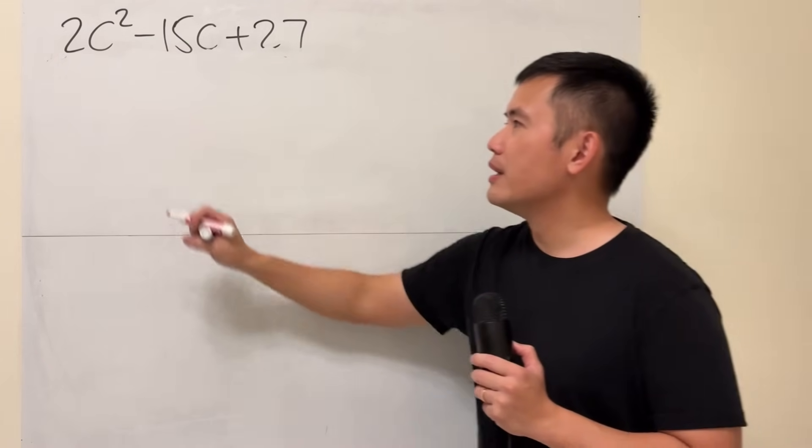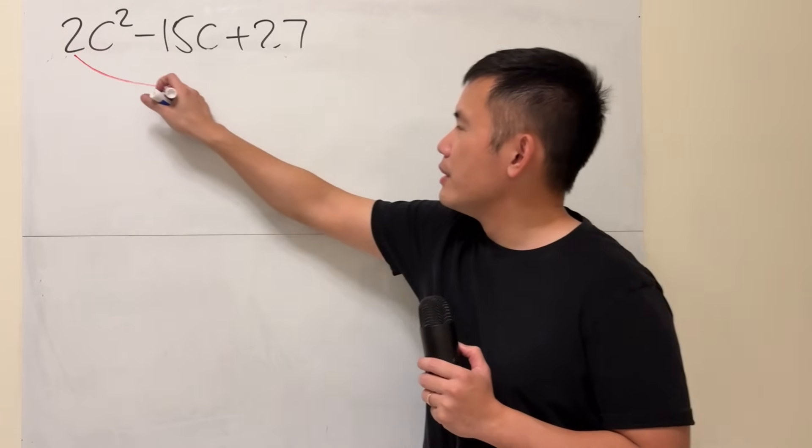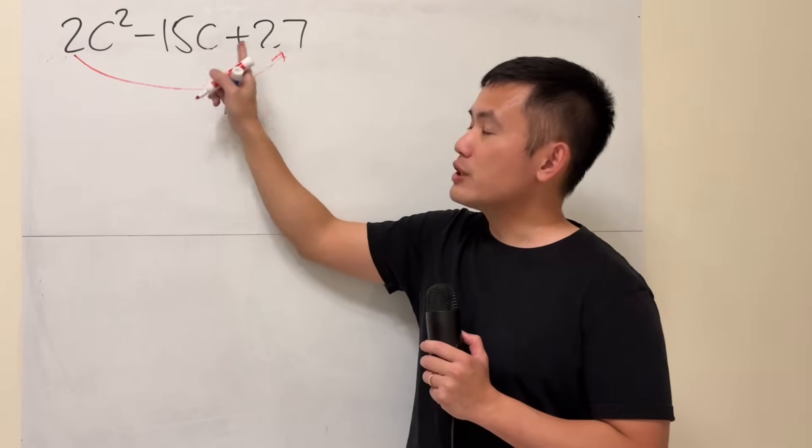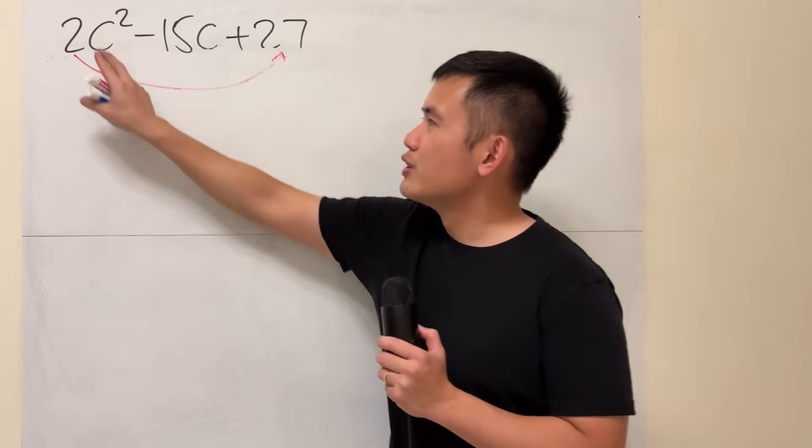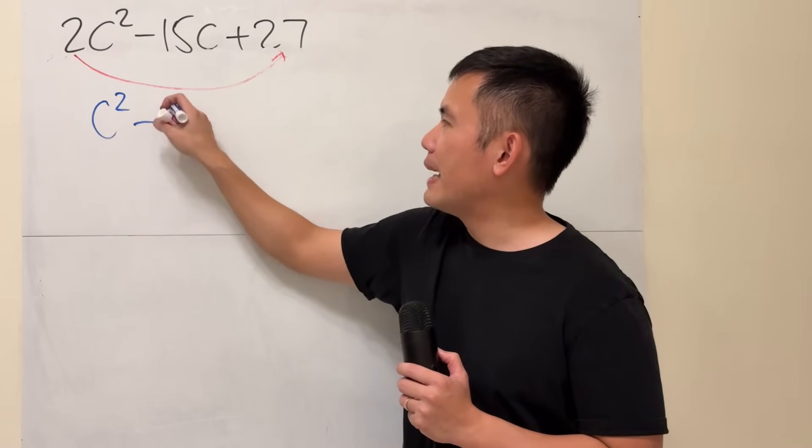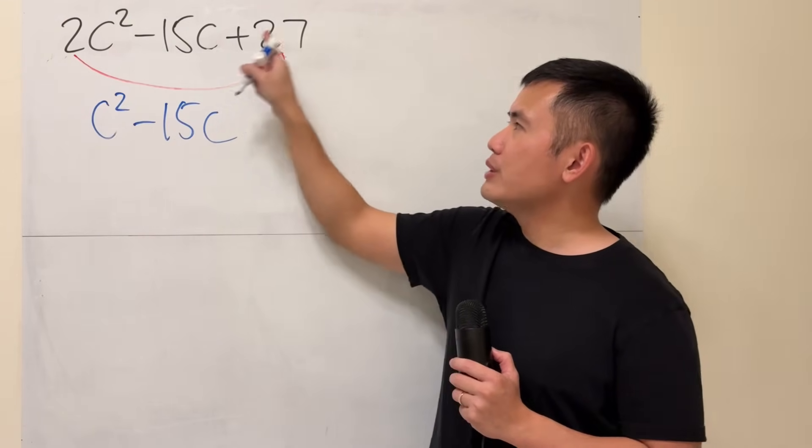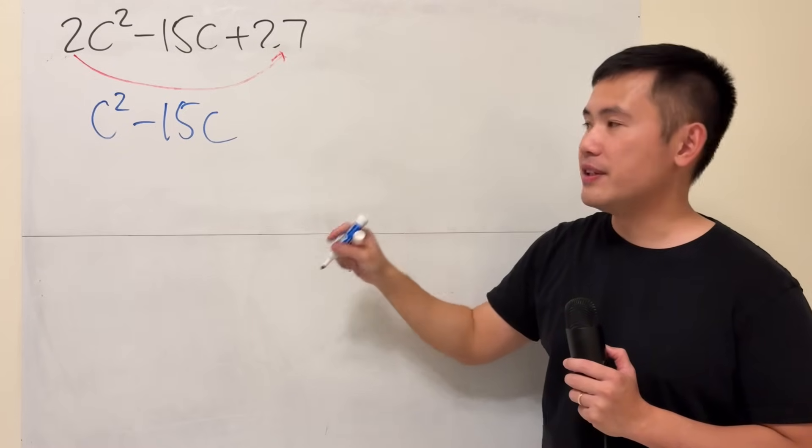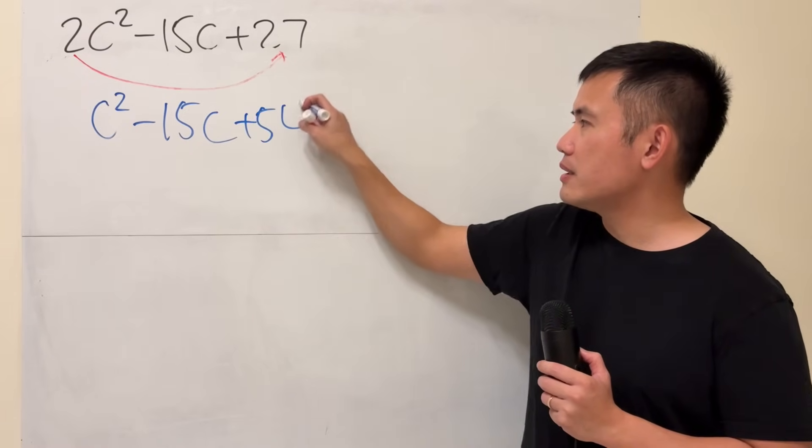So we're going to do the following. First, we're going to slide it. Take the 2, slide it to here, and just multiply with the 27. So you don't have the 2 right here anymore. So you have c squared minus 15c, 2 times 27 is 54. And that's a positive 54 right here, like this.